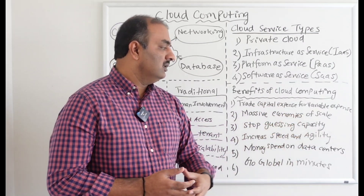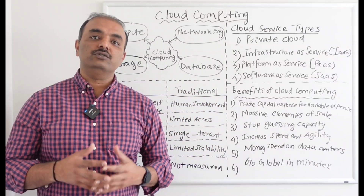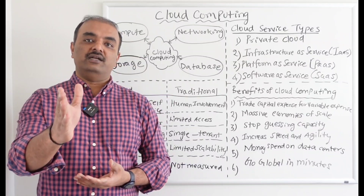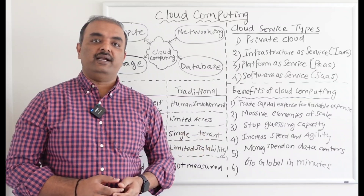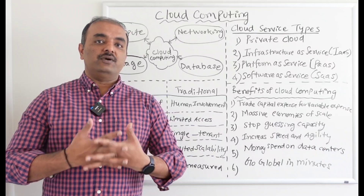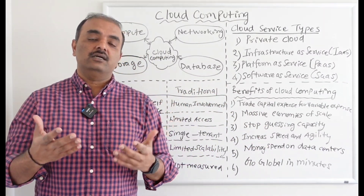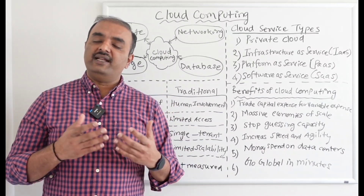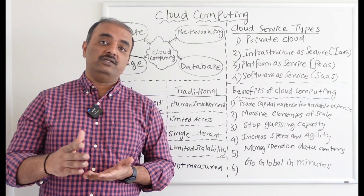The second benefit is massive economies of scale — you can use cloud computing anywhere across the world as long as you have good internet. Third is stop guessing capacity, which is very important. Just like in agile, you plan story points but things always exceed expectations due to various factors. The same applies to servers and databases — if capacity needs increase, cloud computing vendors automatically scale it up so you don't need to worry.